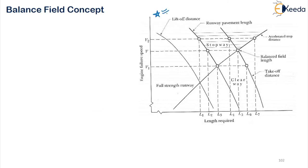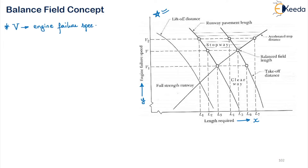Now let us understand this particular figure which will help us to decide what should be the runway length, what should be the stopway length, and what should be the clearway length based on the balance field concept. This figure shows the relationship between the engine failure speed — along the Y-axis — and the length required — along the X-axis. Let us consider V to be the engine failure speed corresponding to the balance field concept.